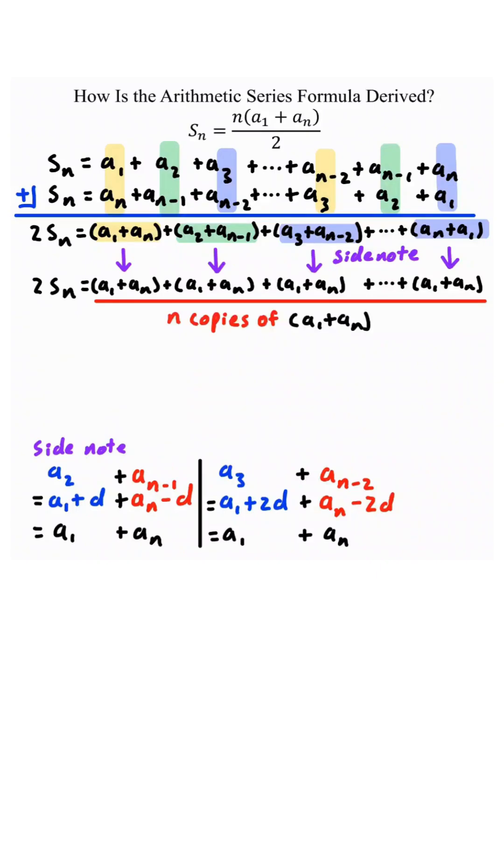Notice that there will be n copies of a sub 1 plus a sub n. So we group them all together. We get 2 times s sub n equals n times a sub 1 plus a sub n.